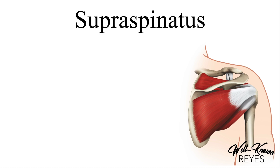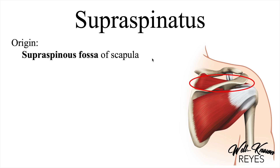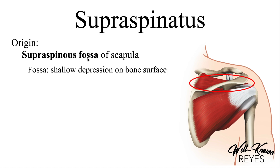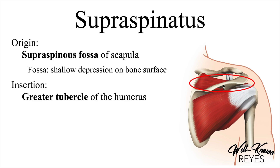So the first one we have is the supraspinatus, and that is this muscle right here. It originates at the supraspinous fossa of the scapula. A fossa is a shallow depression on the surface of a bone, and there is a shallow depression at the superior aspect of the scapula right here. And it inserts at the greater tubercle of the humerus.